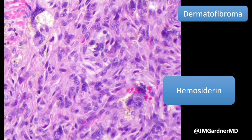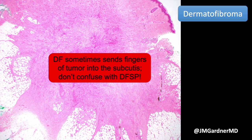The more multinucleated foamy cells you have, the more likely you are to find hemosiderin. These changes go hand in hand with blood — you find more foam, more multinucleation, and more hemosiderin in dermatofibromas that have more hemorrhage. Although dermatofibromas are classically centered in the dermis, extension into the subcutis is really common and nothing to be concerned about; you can see a little bit of fat trapping at the bottom.